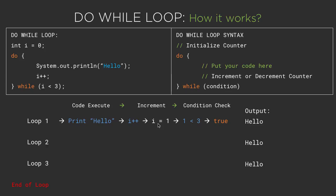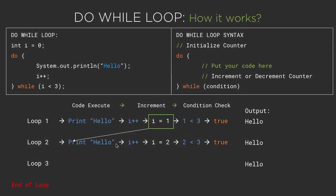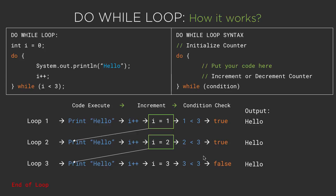For loop 2, i is now equal to 1. We are simply going to print hello without checking the condition first, because the condition in case of do-while loop is checked at the end. After printing hello, we increment i++, then i becomes 2, and we check the condition: 2 is smaller than 3, which is again true. So at the end of loop 2 we have i equal to 2, and this value of counter appears in loop 3. We print hello once again, and after that i++ makes i equal to 3.